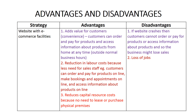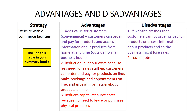We have now described a website with e-commerce facilities as a technology strategy to improve efficiency and effectiveness. Our first learning intention also requires you to evaluate this strategy — to explain and weigh up both advantages and disadvantages. I've colour-coded each advantage and its related disadvantage in this table. Please include this table in your summary books, together with notes from the discussion which follows.